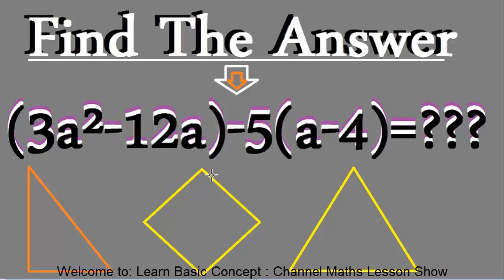Hello all together, happy to see you again. I'm showing you step-by-step, fast and easy. So now, the topic: open bracket 3a squared minus 12a, close bracket, minus 5 open bracket a minus 4, close bracket equals... question mark. So now, we'll solve this for you one by one.